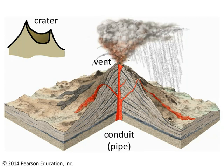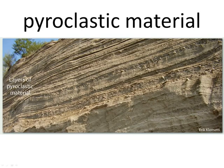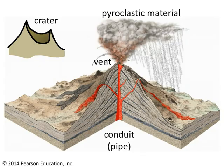Coming out of the vent, whether it's crater-shaped or not, it could be lava or it could be solid chunks we call pyroclastic material. Pyroclastic material gets shot out of the volcano and basically rains down onto the side of the volcano, building up in layers — lots of little particles of rock, mineral fragments, and volcanic glass. We classify pyroclastic material on the basis of how big it is.